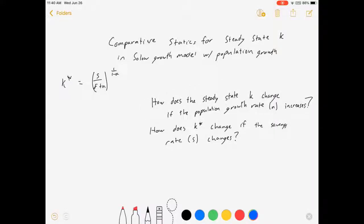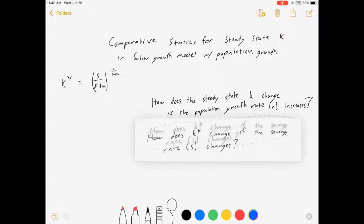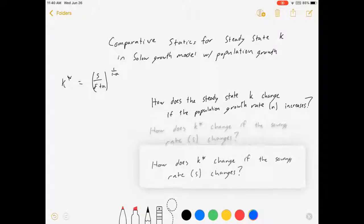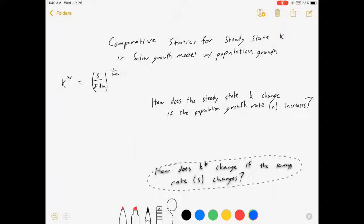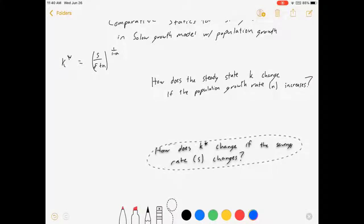Another example is, how does steady state level of capital change if our savings rate changes? If we wanted to target a specific steady state, we could move our policy to change our savings rate, maybe to target it.